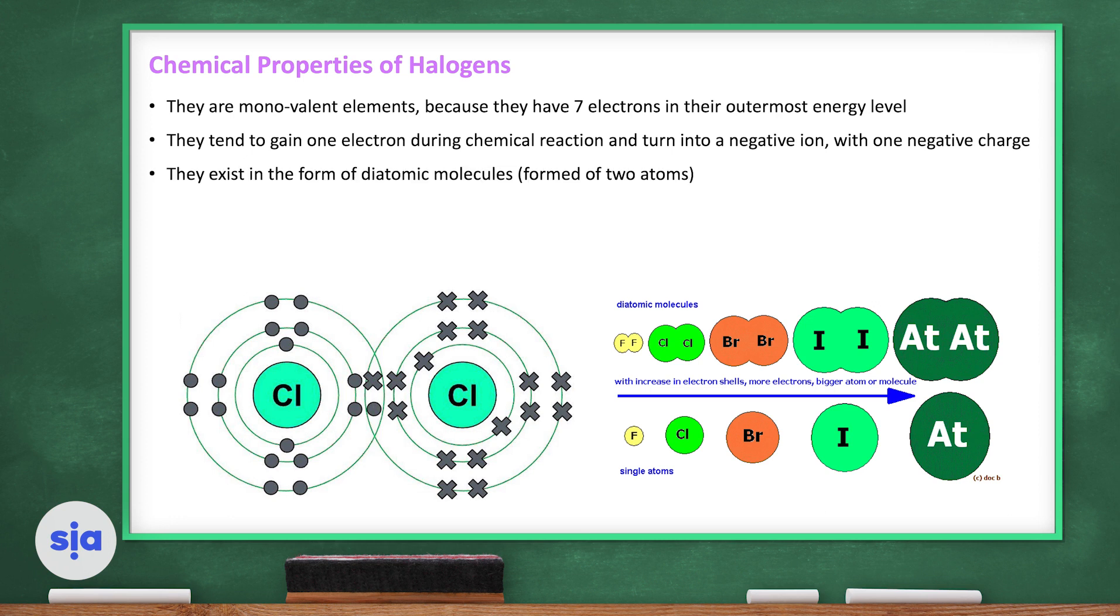And they exist in the form of diatomic molecules formed of two atoms. Let's see these two chlorine atoms. If we count the total electrons, there are 15. If you count the electrons in the outermost shell, there are 7.